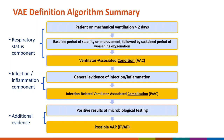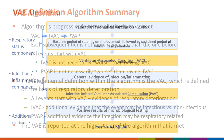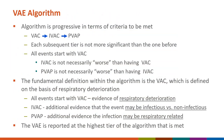The next tier, infection related ventilator associated complication or IVAC, is an infection or inflammation component. The third tier provides additional evidence which indicates a possible ventilator associated pneumonia or PVAP. The algorithm is progressive, such that the criteria for each tier must be met before moving to the next. A patient must first meet VAC criteria before you can assess for IVAC, and then IVAC before assessing for PVAP. However, each subsequent tier is not necessarily more clinically significant than the one before — each tier just provides more evidence about the ventilator associated event.